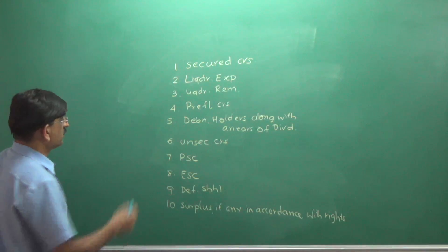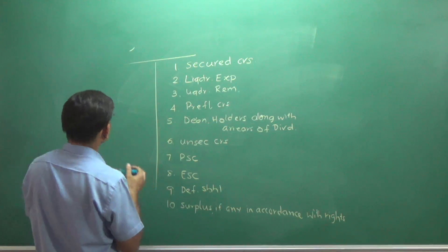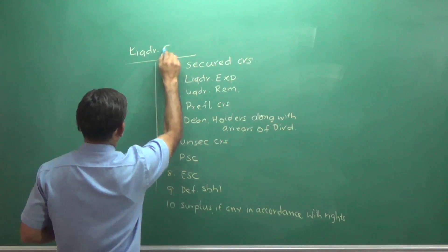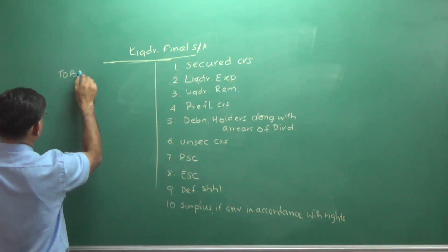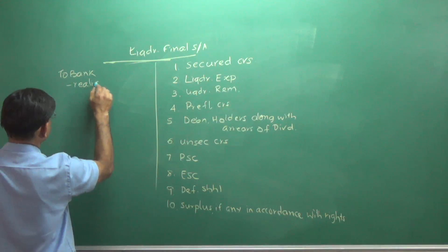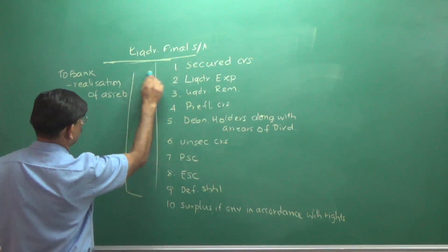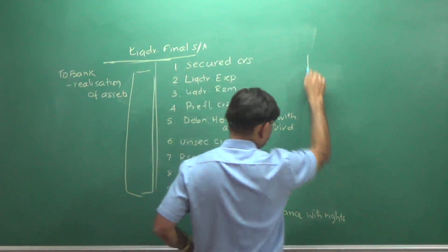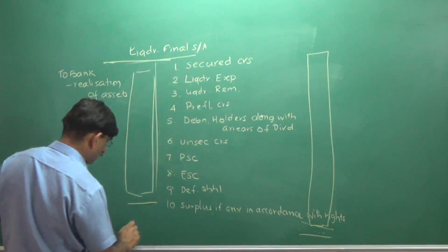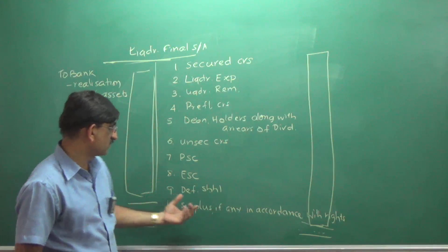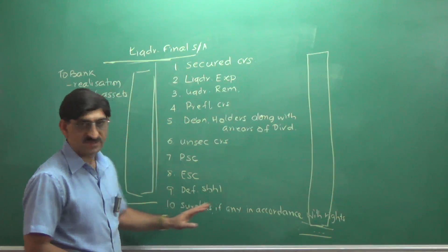The format for liquidators final statement of account will be: These are all the payments. Then, this is amounts realized. Realization of assets. Based on what we are going to realize, we are going to pay this. The balance, there'll be no balance carried down. This total and this total will be same. If at all, if there's any balance, that is called surplus, and that will be paid to the shareholders. After paying equity share capital, deferred shareholders, surplus, if any, will be paid. So there'll be no chance to have closing balance.